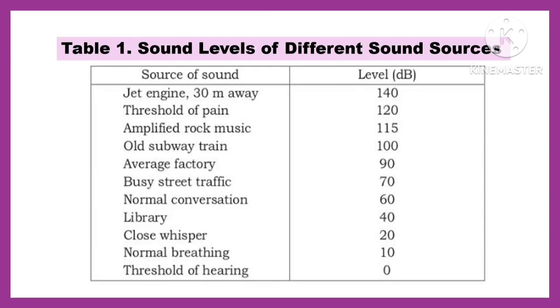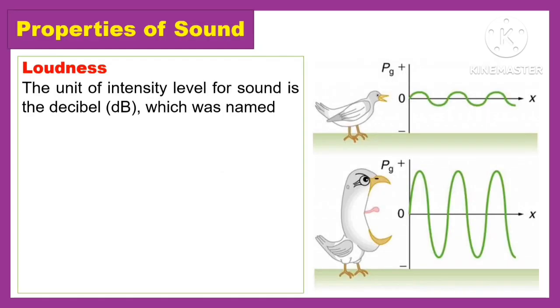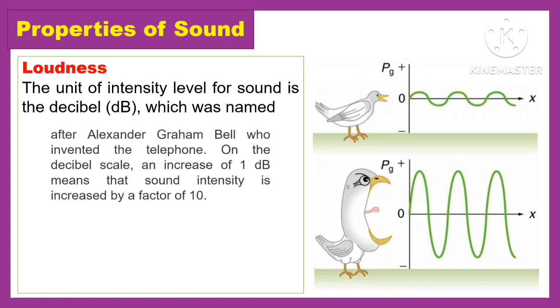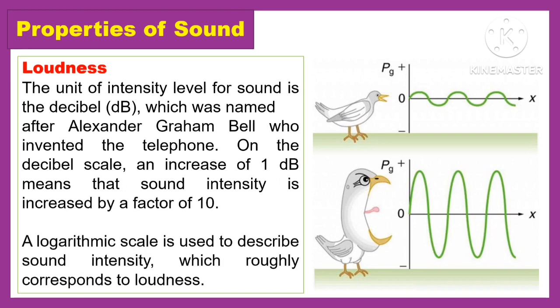The following are the sound levels of different sound sources. The unit of intensity level for sound is the decibel, which was named after Alexander Graham Bell, who invented the telephone. On the decibel scale, an increase of one decibel means that the sound intensity is increased by a factor of 10. A logarithmic scale is used to describe sound intensity, which roughly corresponds to loudness.